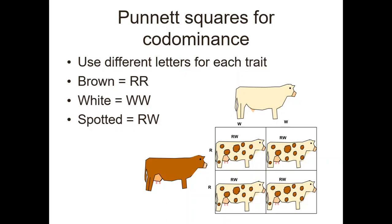Here we've got a Punnett square showing co-dominance — a white cow and a brown cow. We use different letters for each trait. For brown, we're going to say that's big R, big R. This is the brown cow; it has udders, so it must be the female, so we put it on the left: R, R. The white one is the male, and we put those not as little r's but as big W's — W, W — because they're both dominant.